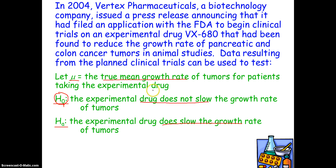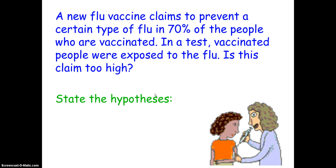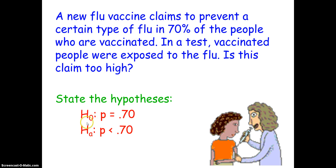Let's try it one more time with a slightly different scenario. In this problem, a new flu vaccine claims to prevent a certain type of flu in 70% of the people who are vaccinated. In a test, vaccinated people were exposed to the flu. Is this claim too high? Now here's the little difference — we're using a proportion, and they're claiming that this claim is too high, so they're saying the actual proportion is lower. That's our effect that we want: we want the proportion to be lower. The null hypothesis retains no change — we say the proportion in which the flu is prevented is 70%, or 0.7. Our alternative hypothesis is that the proportion is less than 0.7.